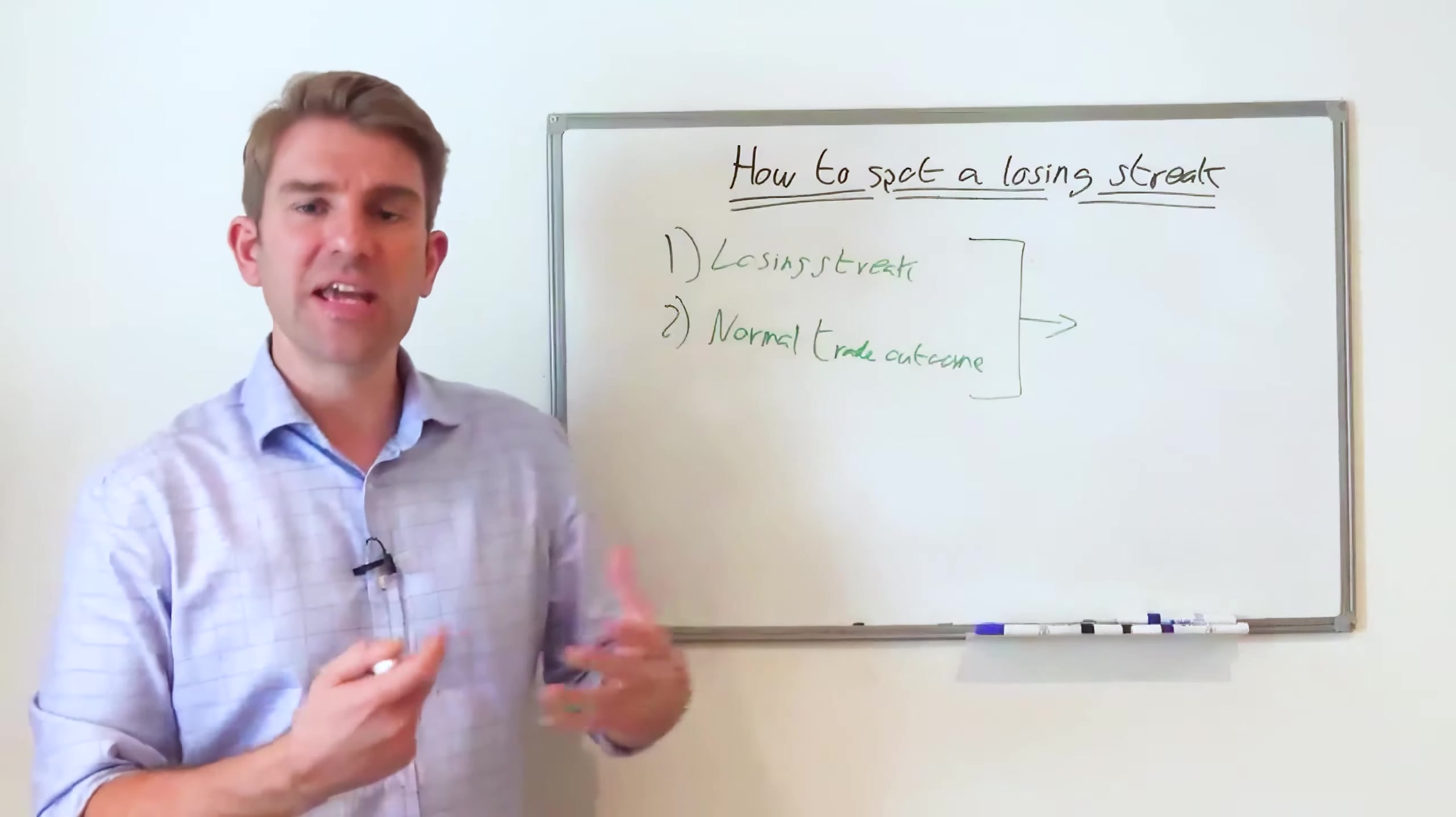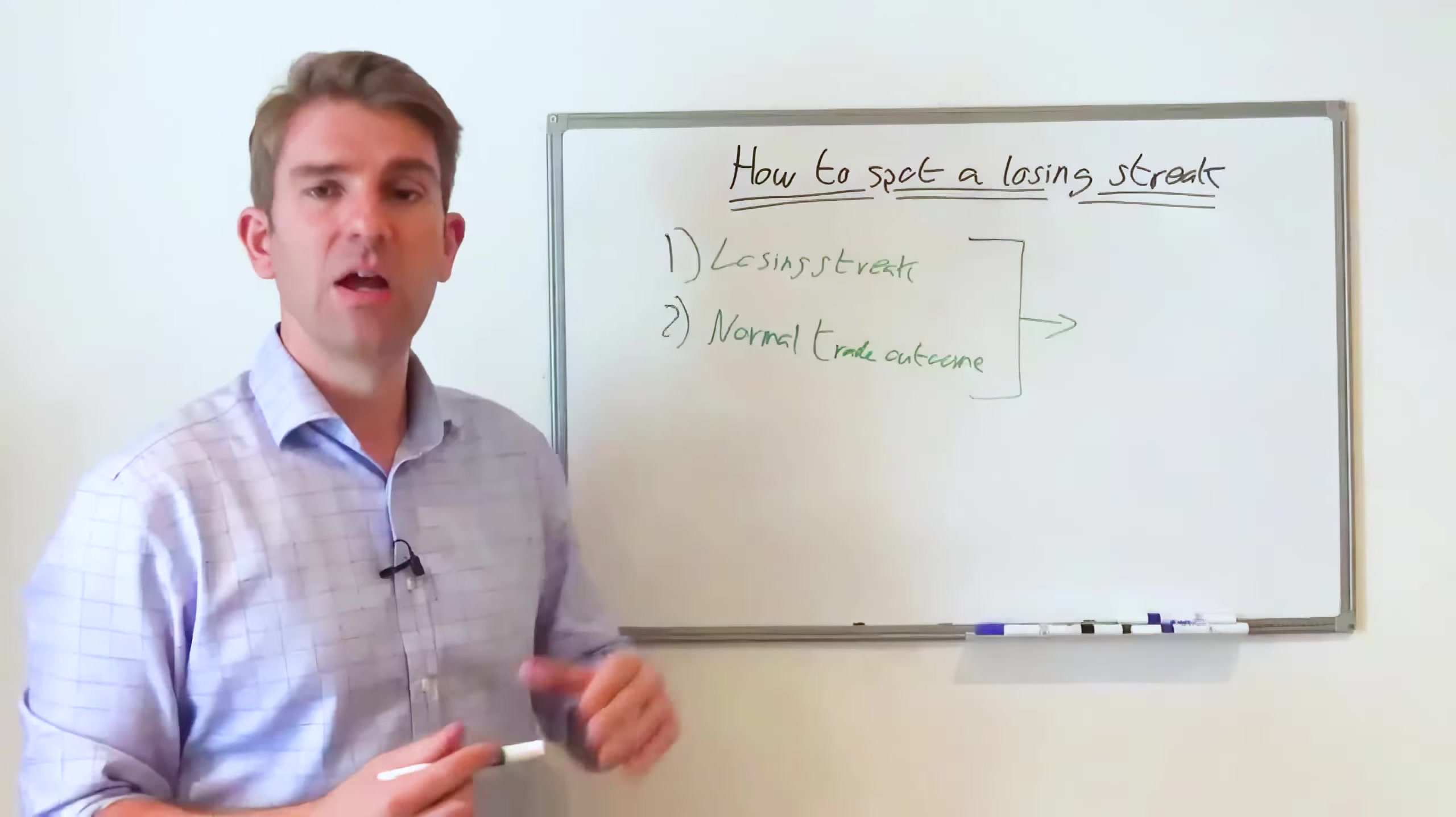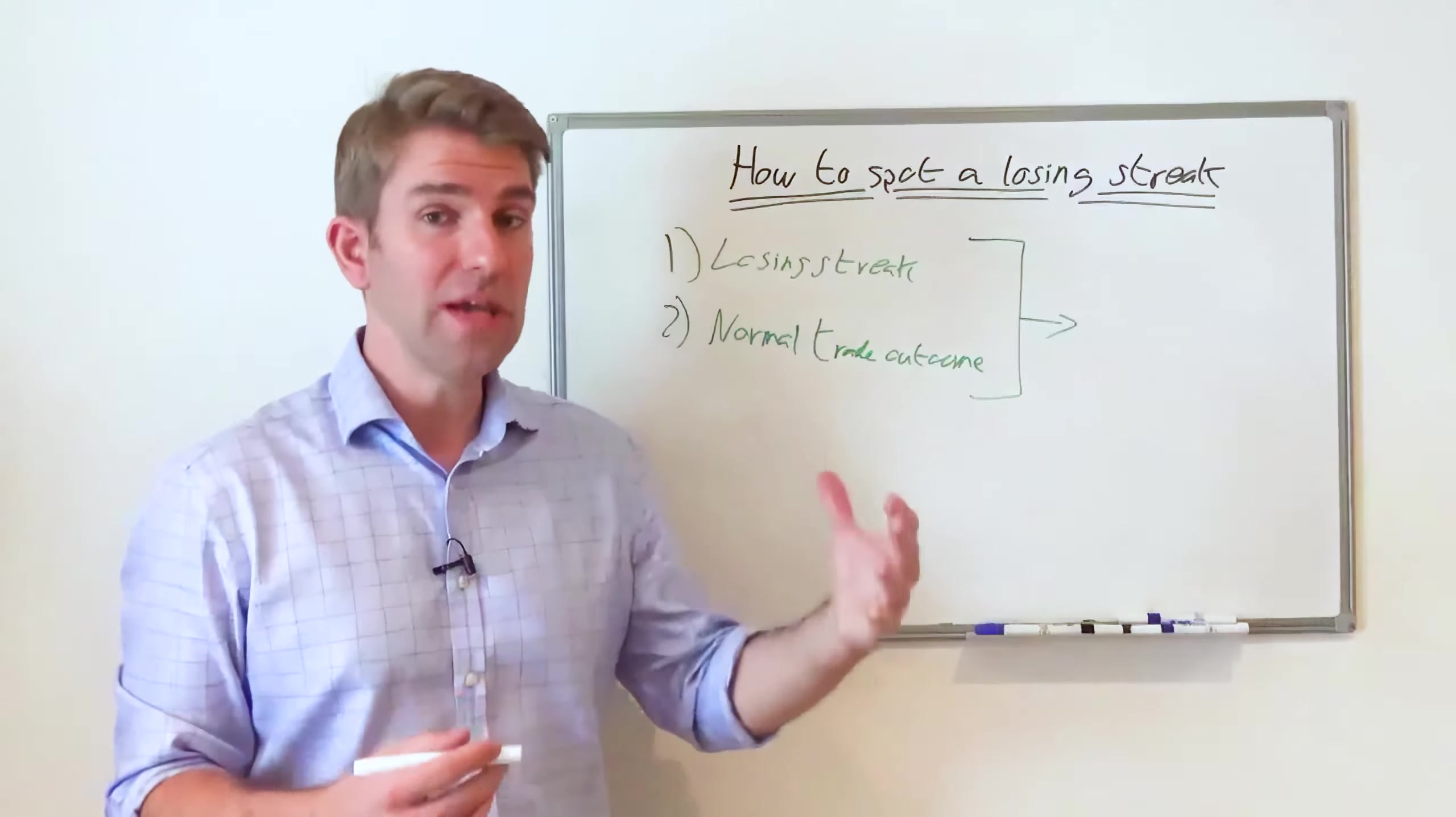Now the question is going to be, how do you know if it's that one or that one? How do you know if it's something that needs to be adjusted or something that's normal trade outcome? There's a couple of things you can do.